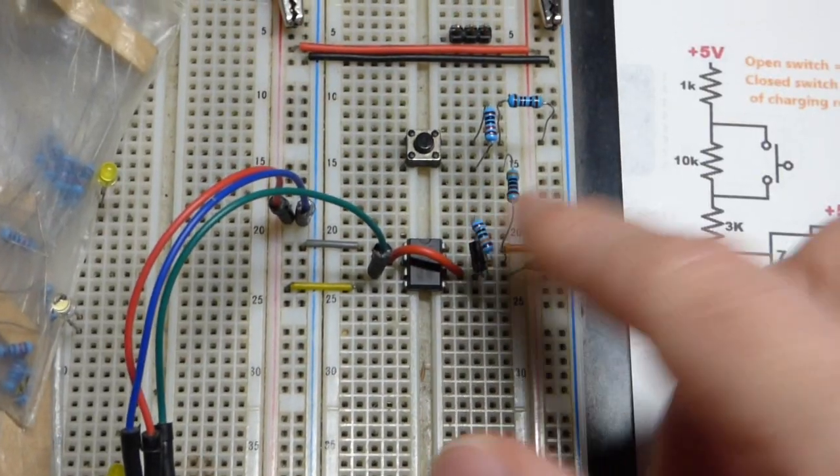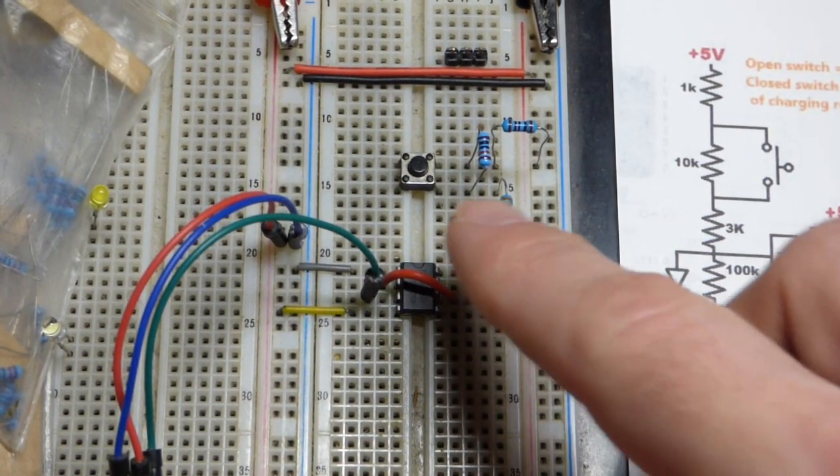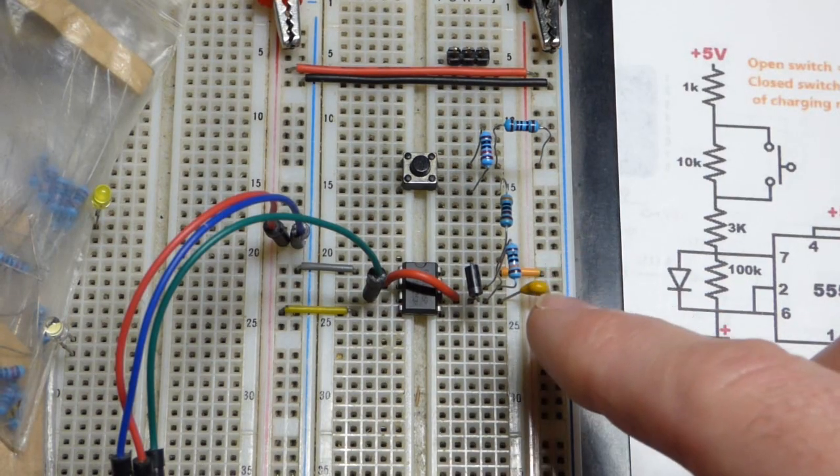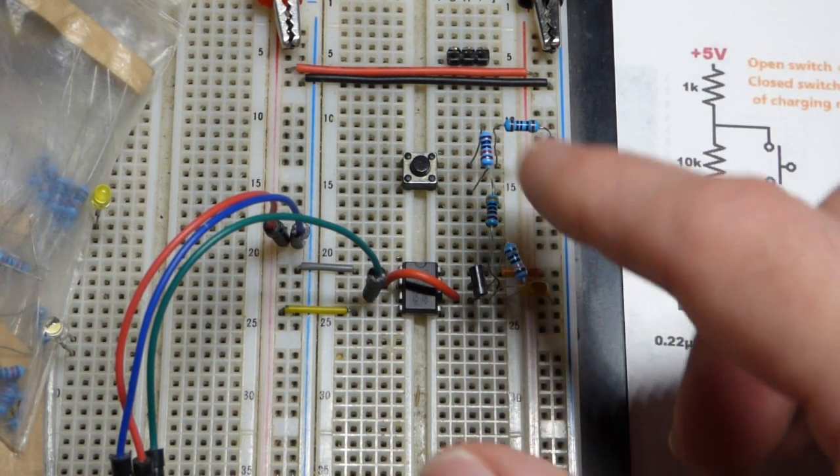The 100,000 ohm resistor and 0.22 microfarad capacitor should give us somewhere around 20 milliseconds of load time, approximately. They don't have to be exact.